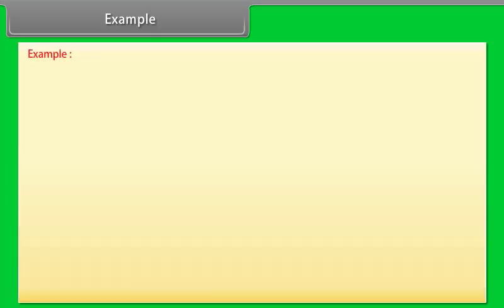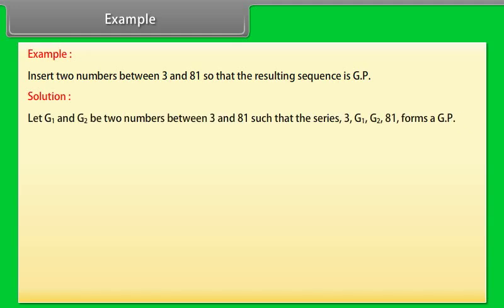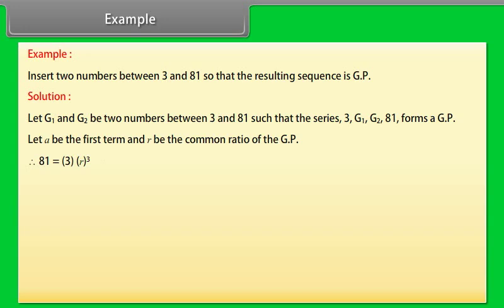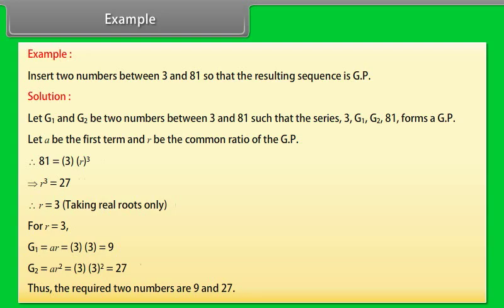Example: Insert two numbers between 3 and 81 so that the resulting sequence is a GP. Let G1 and G2 be two numbers between 3 and 81 such that 3, G1, G2, 81 form a GP. Let A be the first term and R the common ratio. So 81 = 3×R³, which gives R³ = 27, therefore R = 3 (taking real roots only). For R = 3: G1 = A×R = 3×3 = 9, and G2 = A×R² = 3×9 = 27. Thus, the required two numbers are 9 and 27.